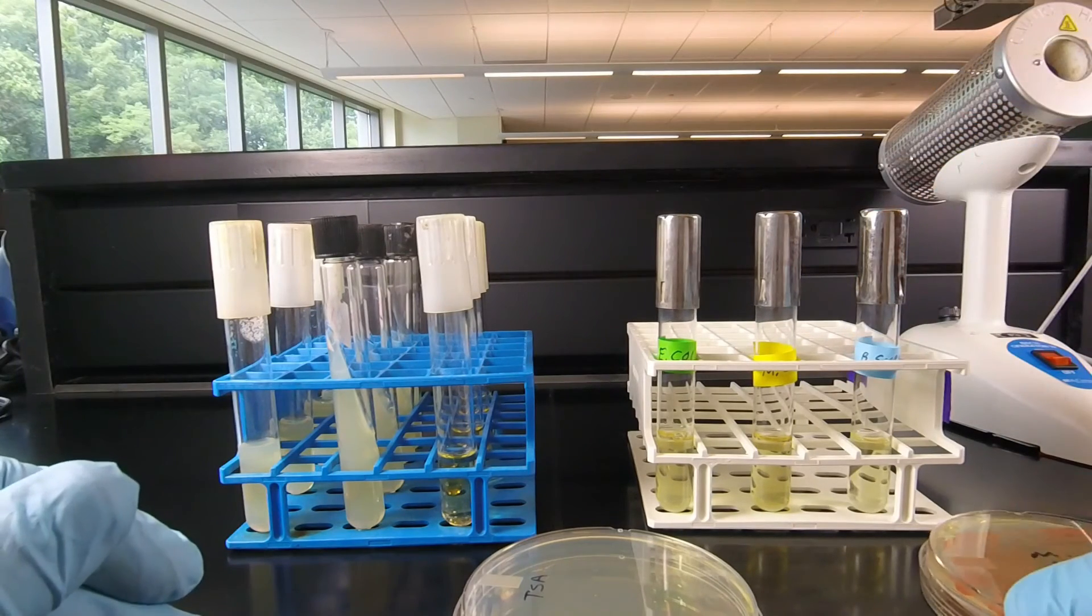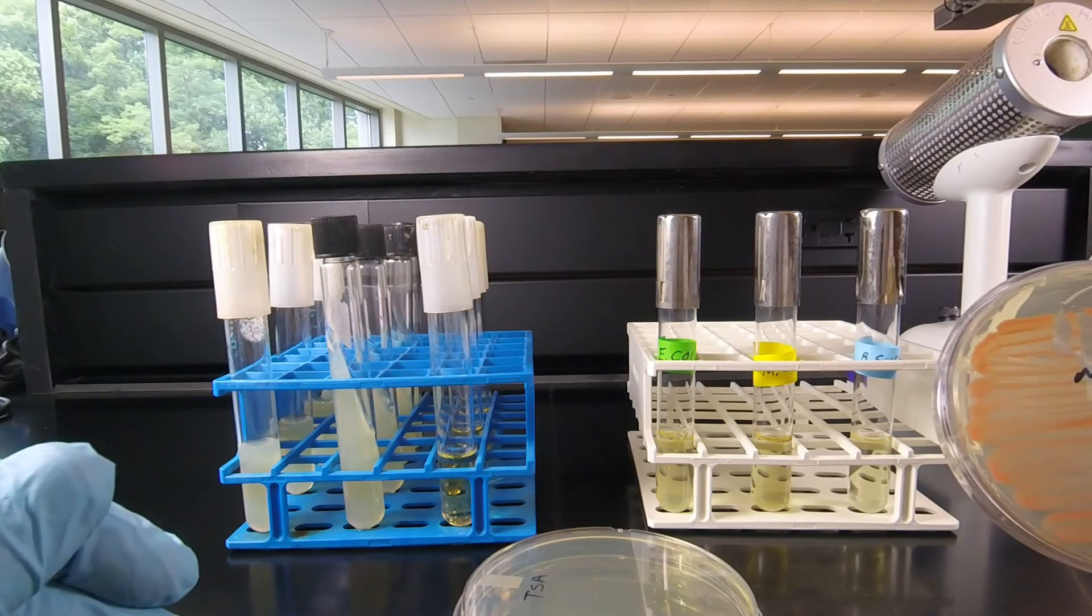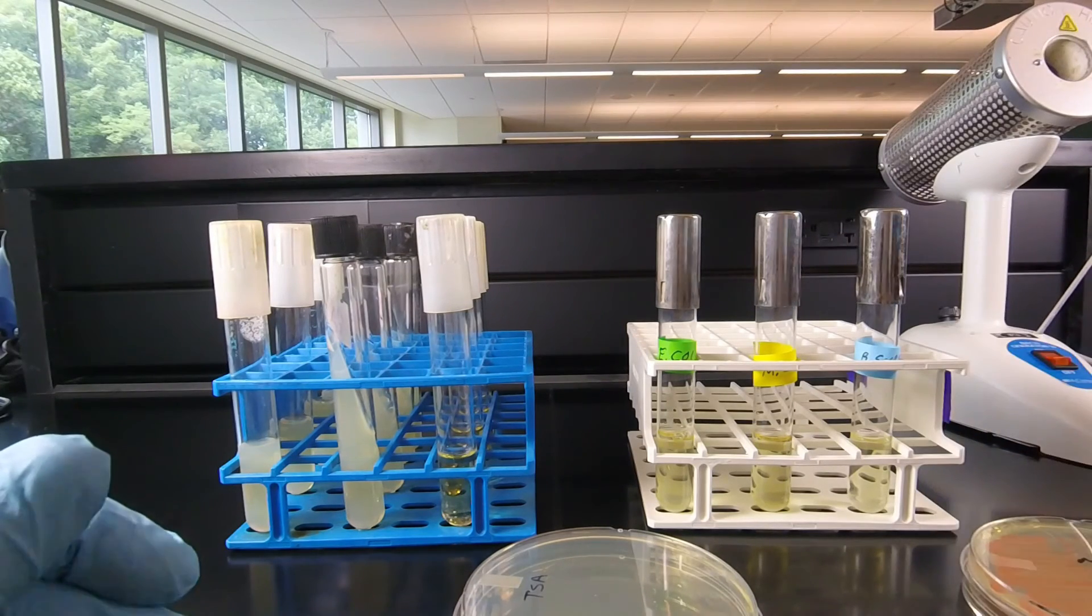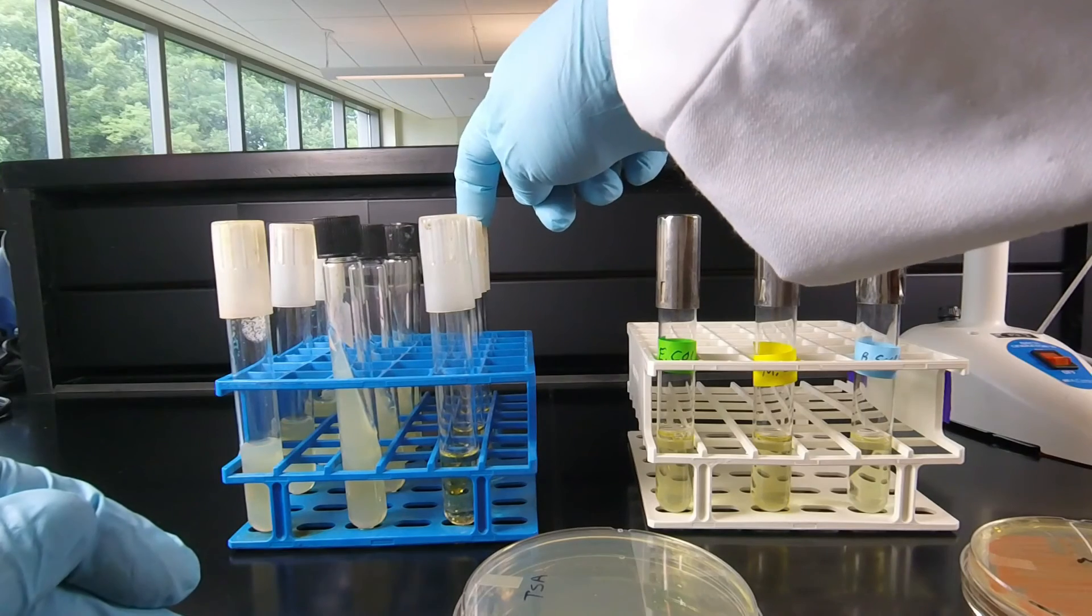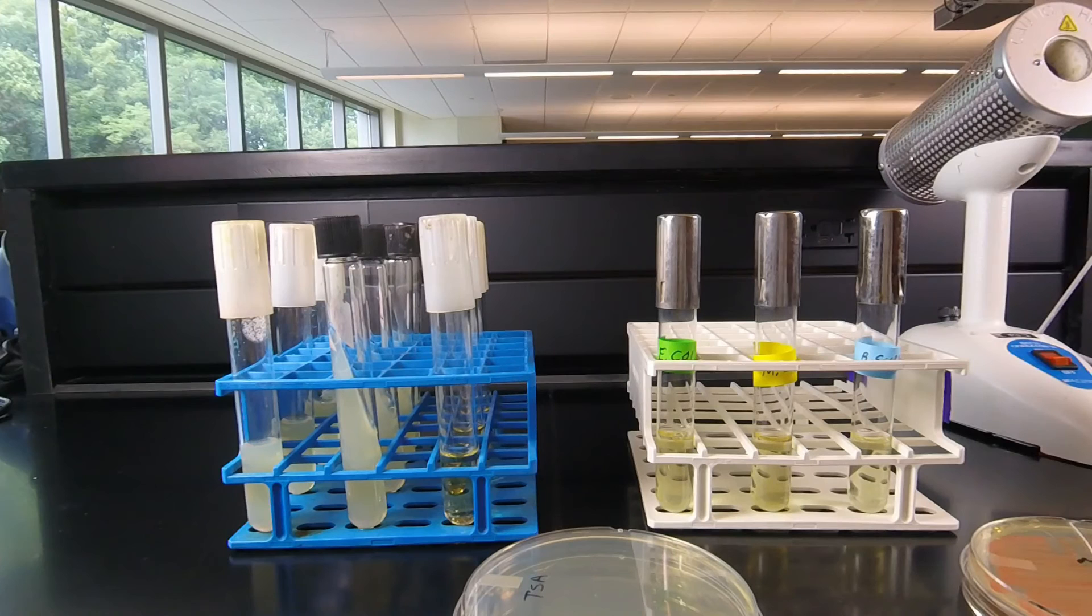And then finally your partner will take the Mycobacterium flea and do the same thing. Scrape off some Mycobacterium flea and inoculate a fourth broth tube, a fourth slant tube, a fourth stab tube, and a fourth petri plate. So that's the 16 inoculations you'll be making today—eight apiece.